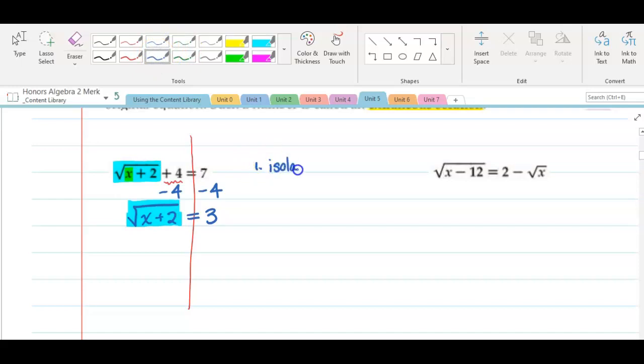Now we want to eliminate the radical. So think about before, when we eliminated this plus 4, we subtracted it. Because addition and subtraction are inverses. So we're trying to think, well, what will cancel out a square root? What's the inverse of a square root? And the answer is squaring. We want to square this entire side. Because if I square a square root, they cancel out. But remember, if I do that on the left, I do that on the right. So we're eliminating the radical now. On the left, I'm left with x plus 2. And on the right, I'm left with 9.